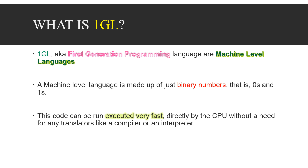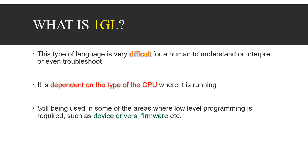This language contains codes that can be executed very fast directly by the CPU, and there is no need for any translator services like a compiler or an interpreter. This type of language is very difficult for a human to understand, interpret, or even troubleshoot in case of any issues. And it's very closely dependent on the type of CPU where it's running — in other words, you cannot port a code written for a particular CPU to another computer containing a different type of CPU.